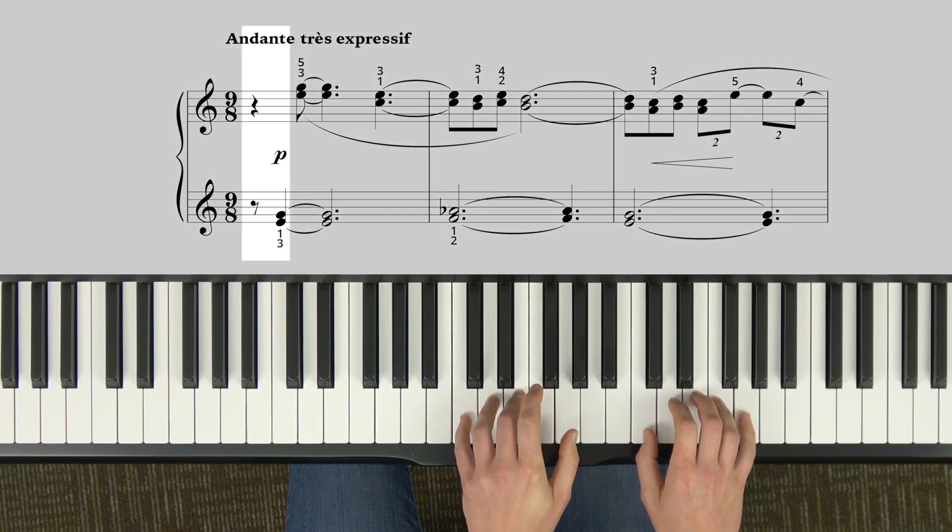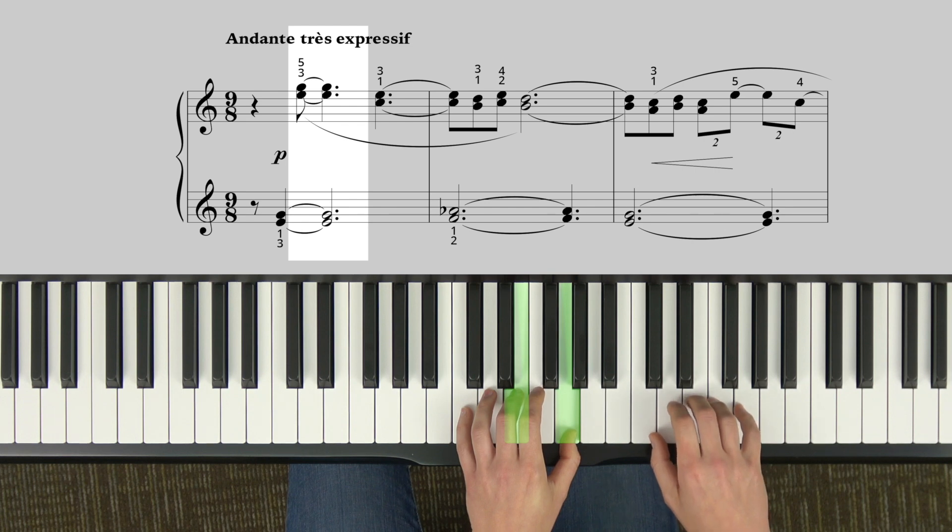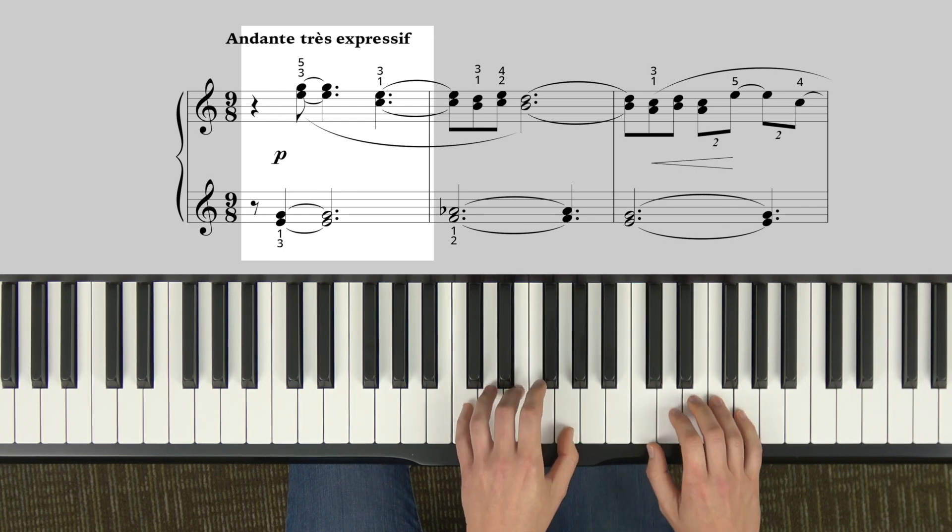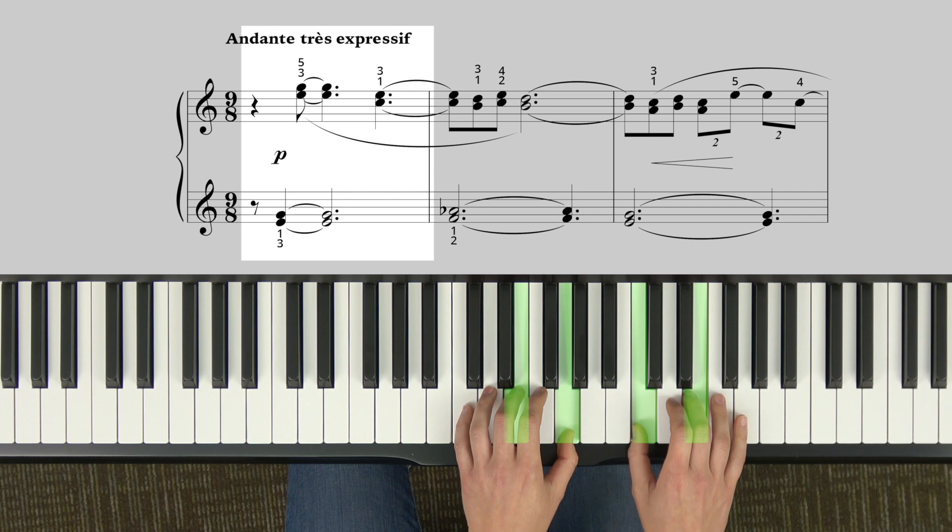Your left hand starts on E and G with one and three finger. And then your right hand repeats E and G with three and five finger. Then comes down to C and E, one and three.